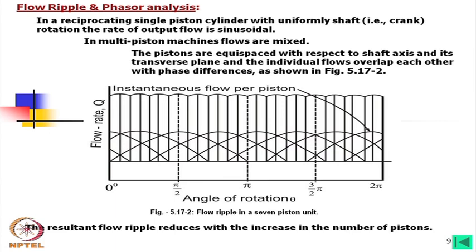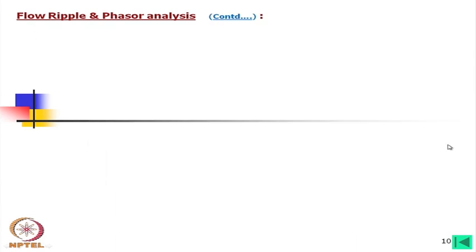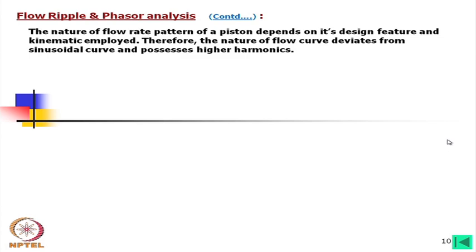We cannot go for a very small number of pistons. The nature of the flow rate pattern depends on design features and kinematics, so the flow curve deviates from a purely sinusoidal curve and possesses higher harmonics. There will be ripple in all cases regardless of the harmonic content.